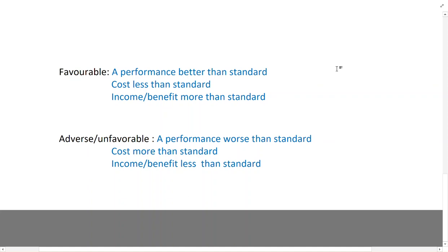An adverse variance is when we have cost more than standard and when we have income less than standard. So the more the income, the less the cost, the better it is. The more the cost, the less the income, the worse it is.